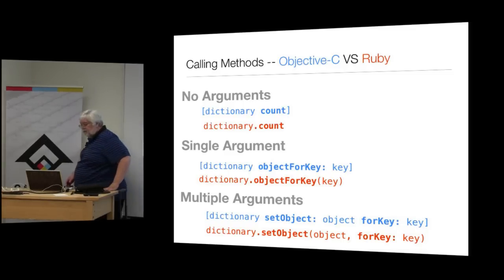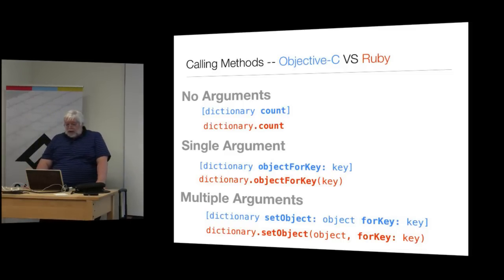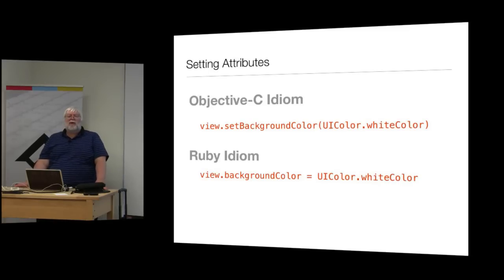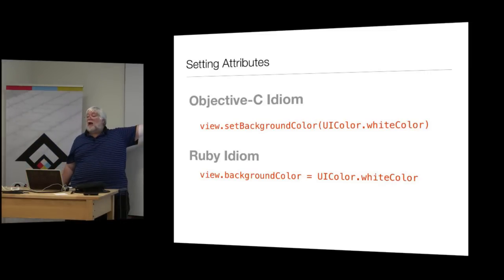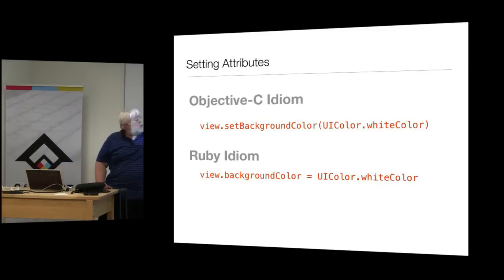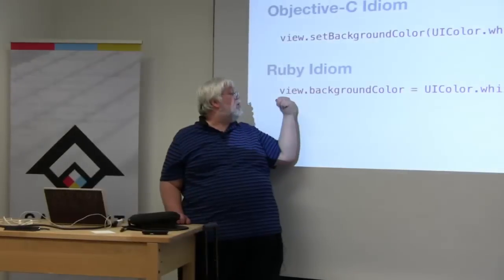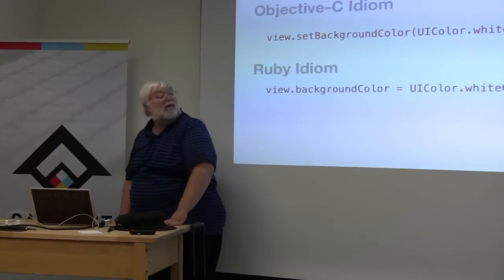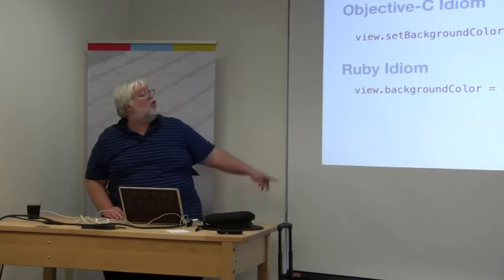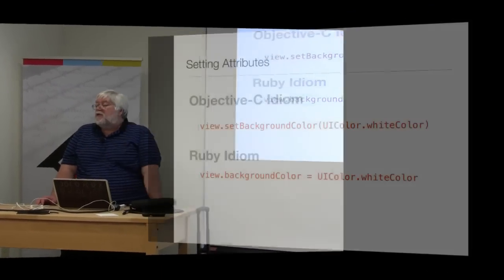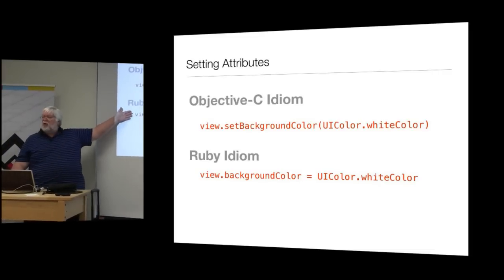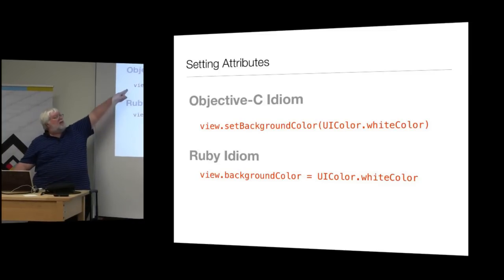There's one more difference added by the RubyMotion libraries: setter methods. If you have a setter method on an object, Ruby will let you use the more idiomatic assignment style. So assigning UIColor.whiteColor to the background attribute calls a 'background_color=' method, which under the hood translates to the 'setBackgroundColor:' Objective-C selector. This is more idiomatic Ruby code, and the libraries rewrite it to forward-delegate to the Objective-C method.